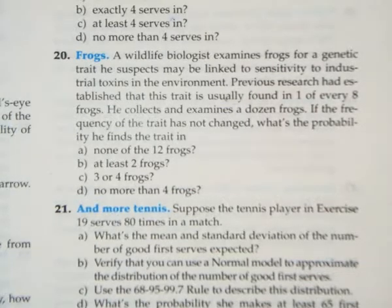Okay, so problem 20 is about frogs. A wildlife biologist examines frogs for a genetic trait. He finds that this trait is usually found in one in every eight frogs. He collects and examines a dozen frogs and the frequency of the trait has not changed. What's the probability he finds the trait?